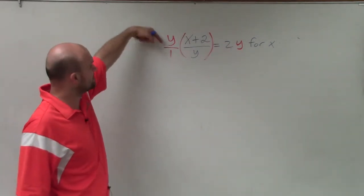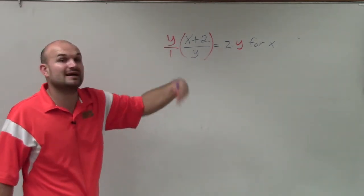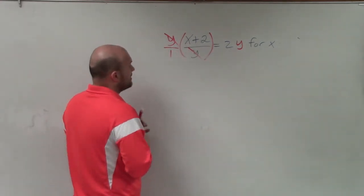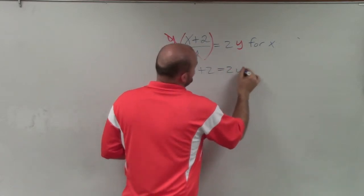The reason why I write the y over 1 is you can see the y is in the numerator and this y is in the denominator. That means, using my division property, these divide to 1. Now I'm just left with x plus 2 equals 2y.